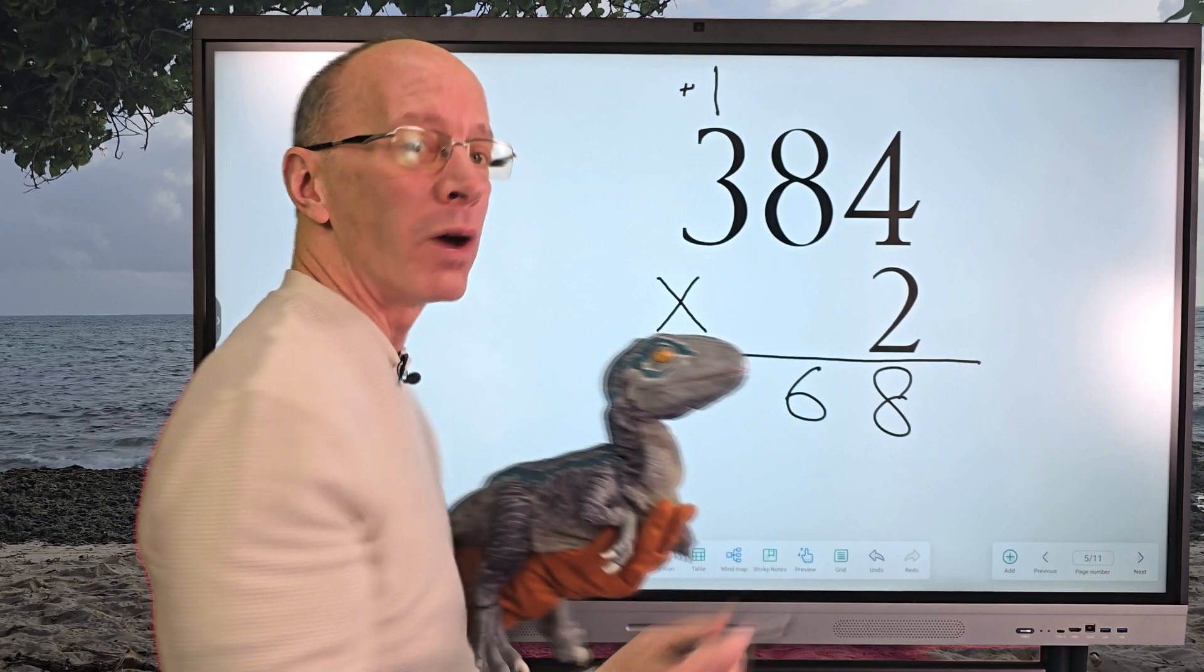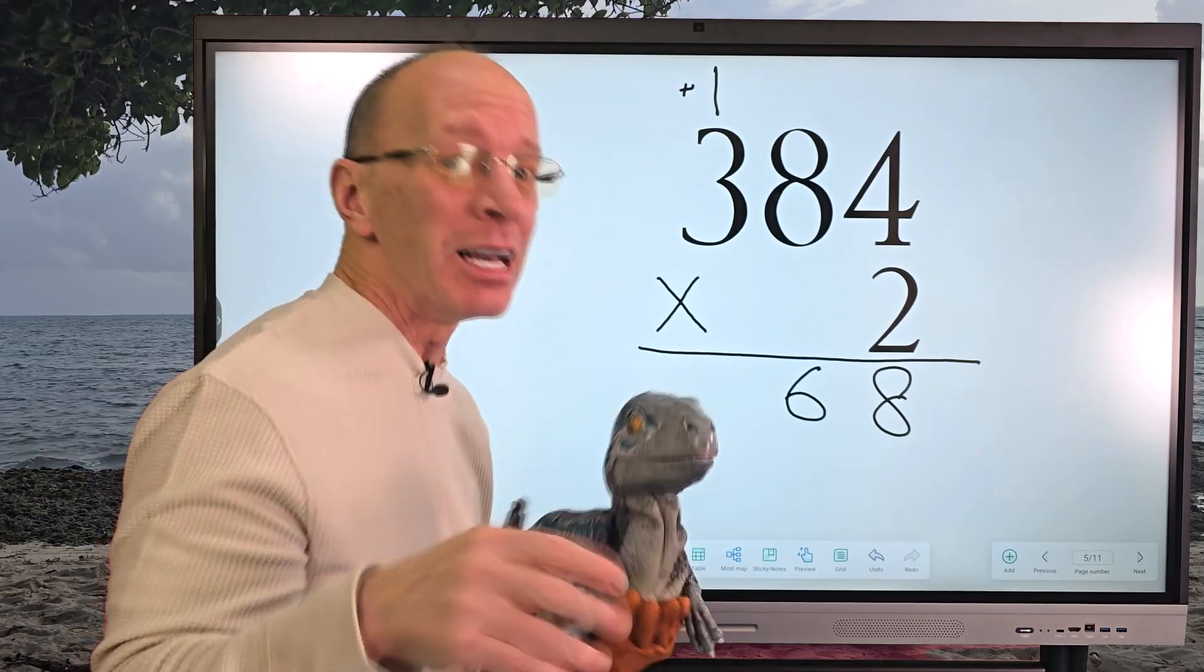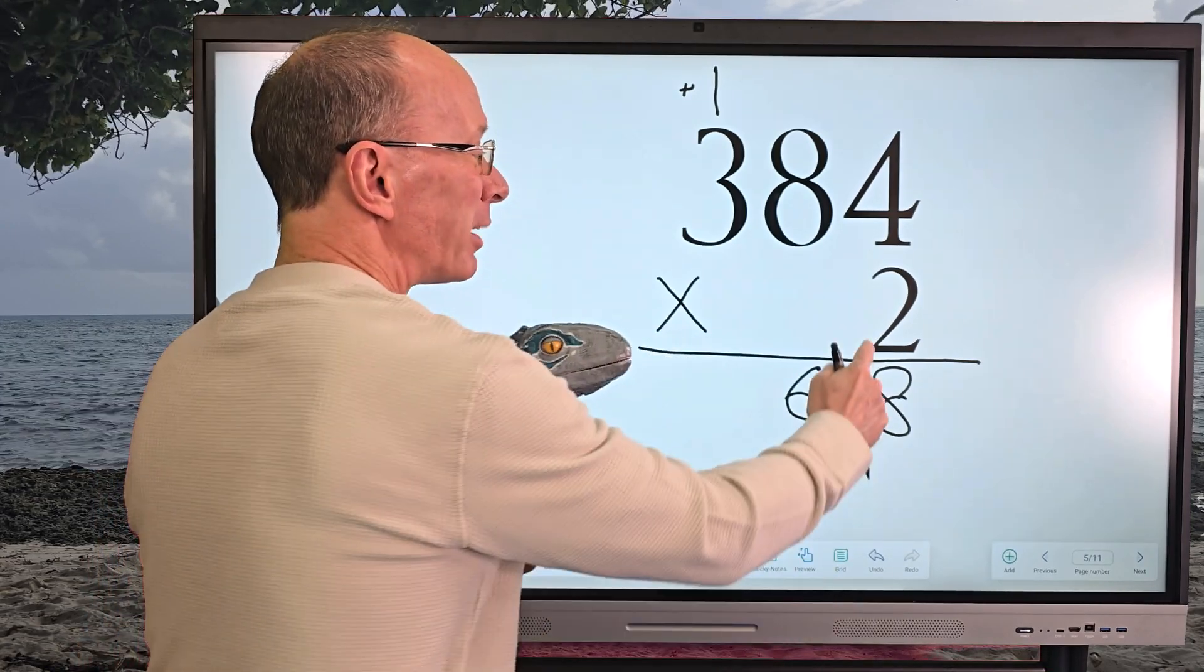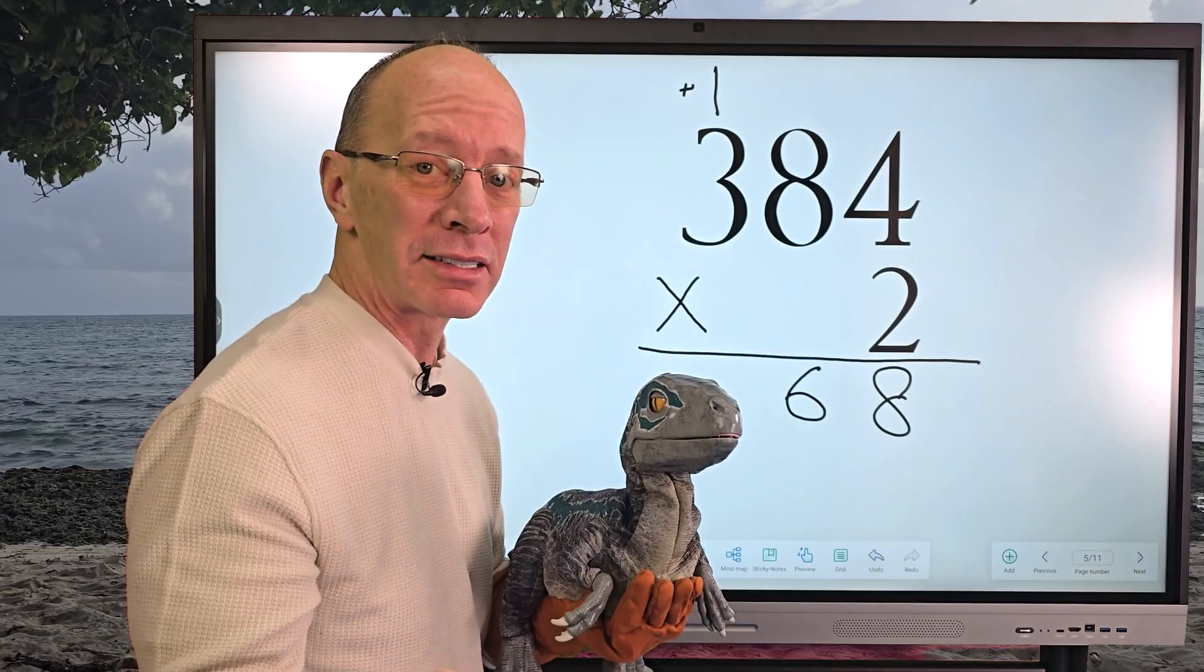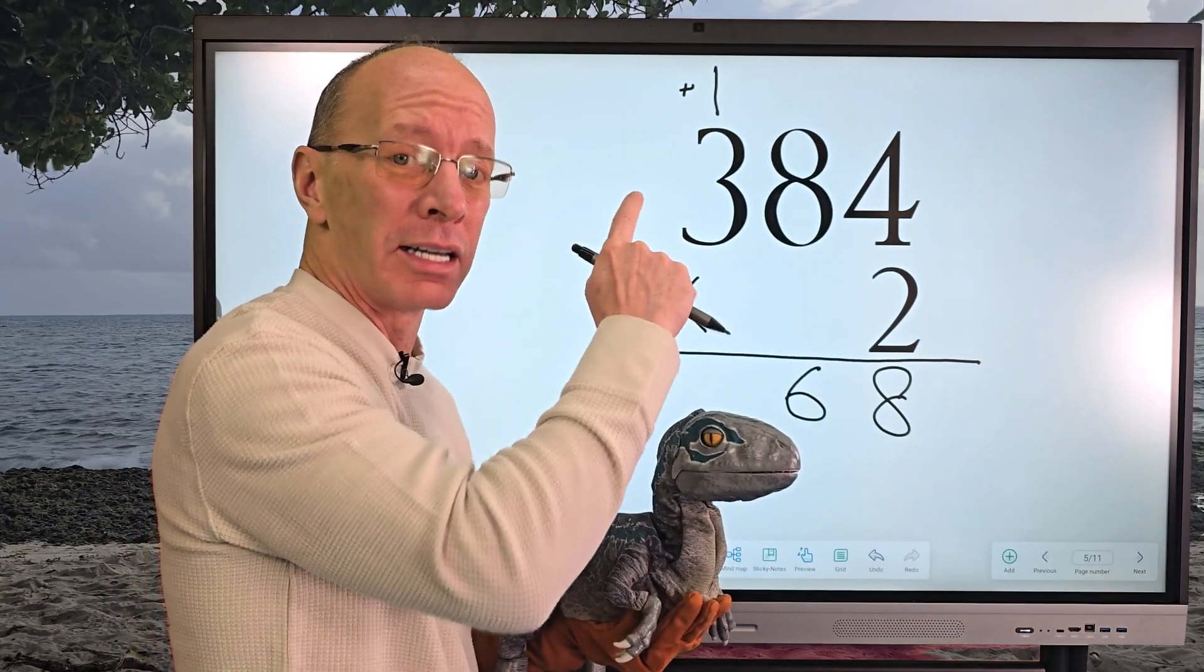So now I'm going to take two times three. Two times three is six. Now I'm going to add that one: six plus one equals seven. Whoa! Yeah, little raptor is excited. Little raptor loves mathematics, don't you?